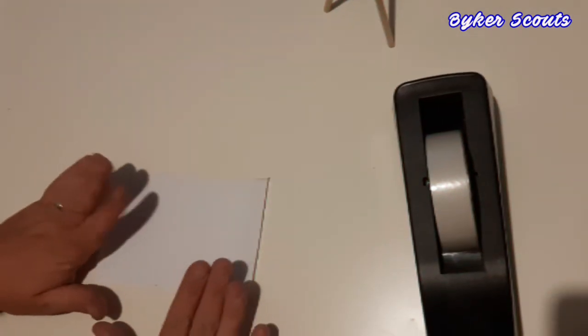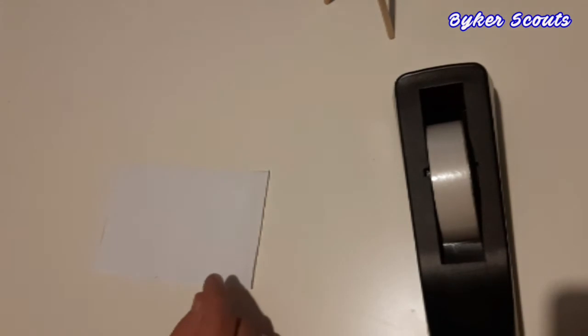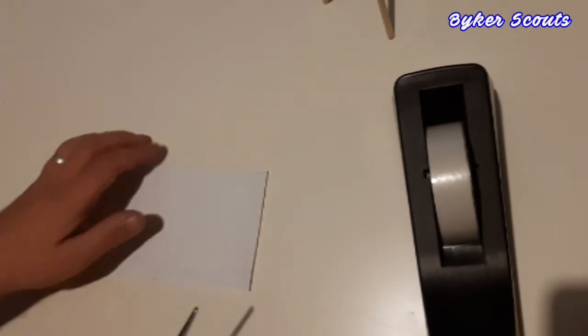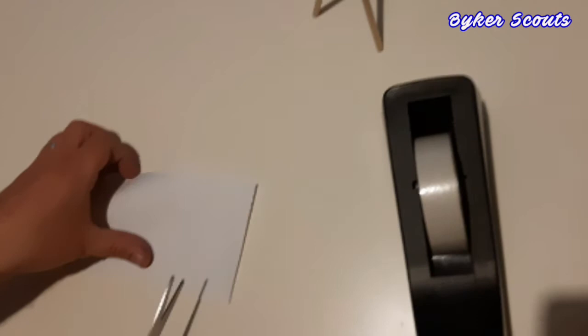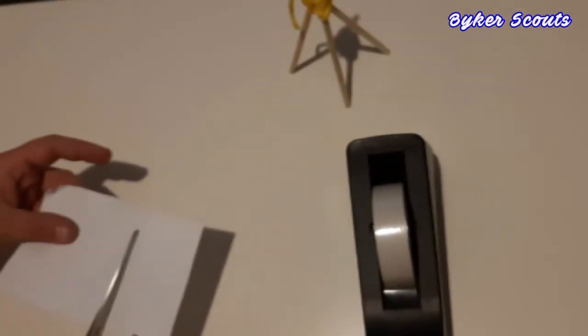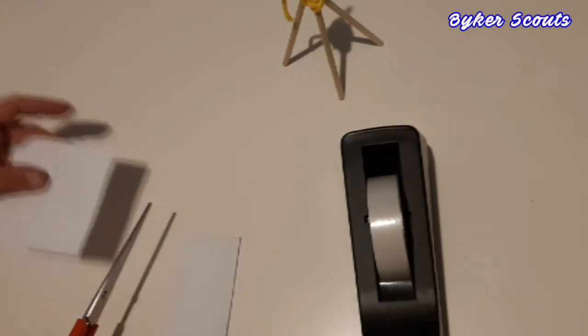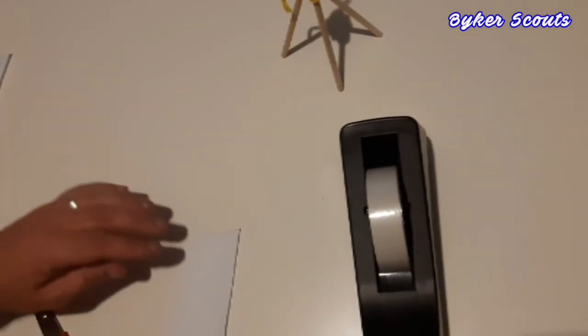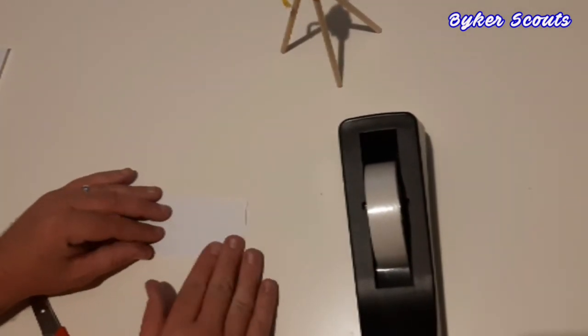So all you're going to do with your flag is cut down into a small rectangular shape which will fit on top of the flag pole. And you can decorate it however you like.